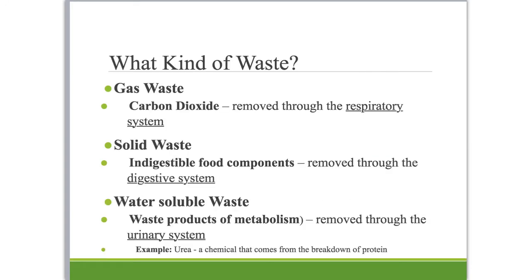What are the various kinds of waste taken out in the excretory system? We have gaseous waste: carbon dioxide is produced in cellular respiration and removed through your respiratory system. Solid waste — indigestible food components — is taken out through your digestive system. But today I want to talk about water-soluble waste, things that dissolve in water. These are various waste products of metabolism, and this is what your urinary system is removing.